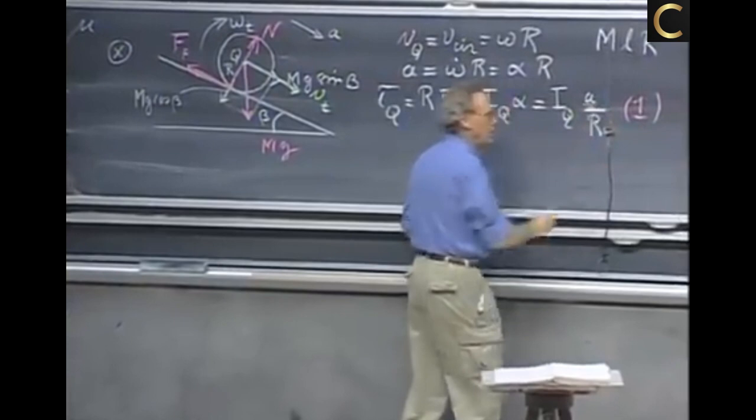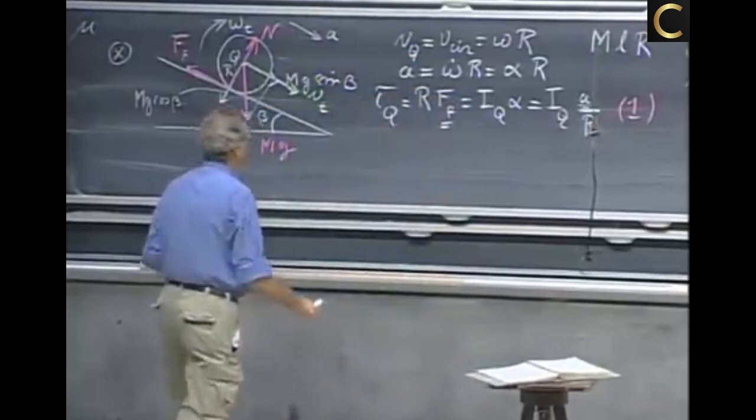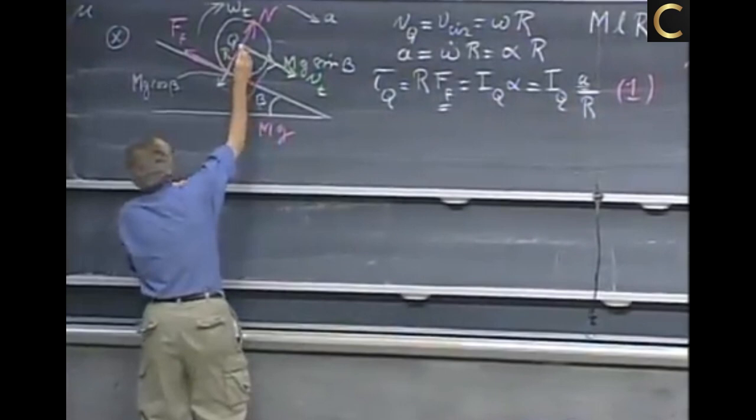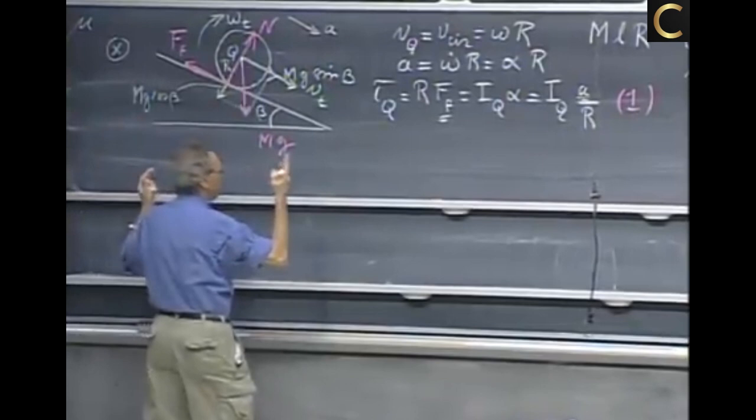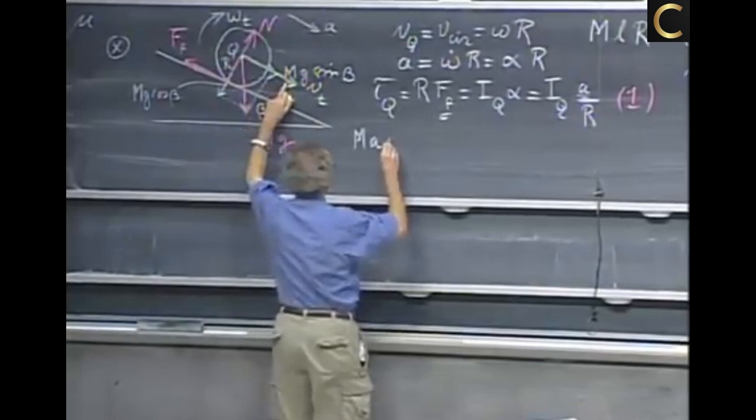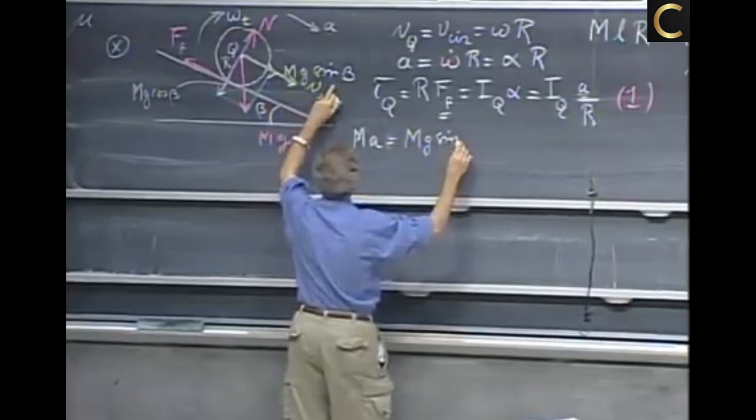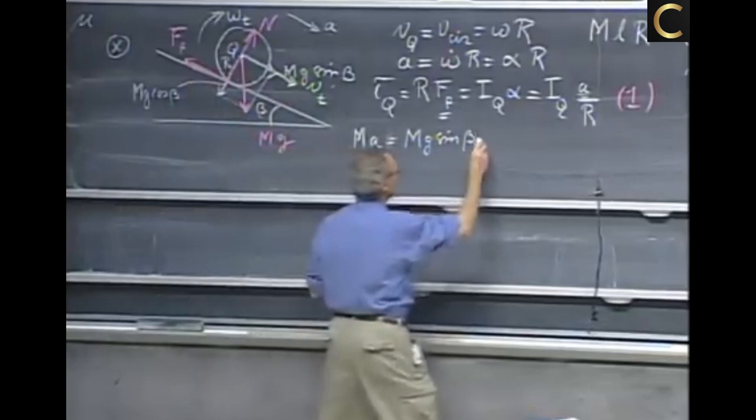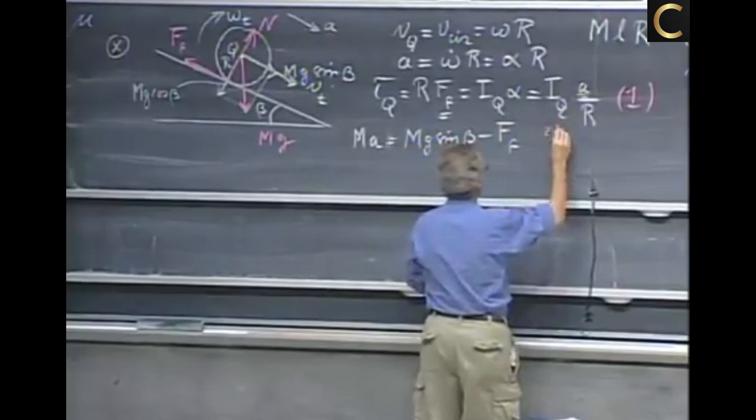And I have as an unknown the frictional force, and I have as an unknown a, and so I cannot solve for both. I need another equation. The next equation that I have is an obvious one, that is Newton's second law, f equals ma. For the center of mass, I can consider all the mass right here at Q. We must have f equals ma. And so m times the acceleration of that point Q, which is our goal, by the way, equals this component, equals mg sin beta. That is the component downhill, and minus f_f, the frictional force, which is the component uphill, and this is my equation number two.